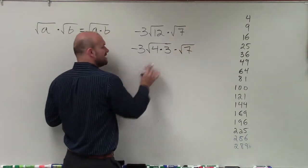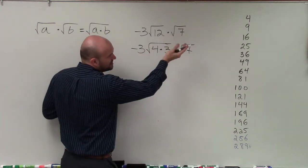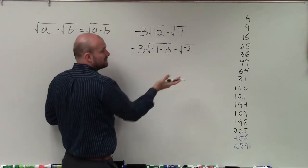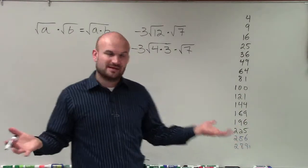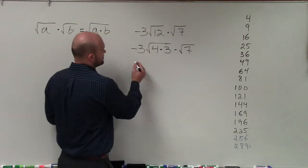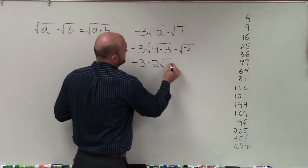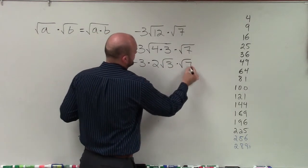Now, the reason why I do that is because the square root of perfect numbers, or you can take the square root of a perfect number, and it's going to be an integer. So the square root of 4 is going to be 2. So I have negative 3 times 2 times the square root of 3 times the square root of 7.